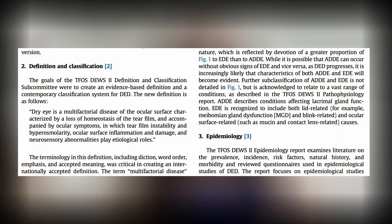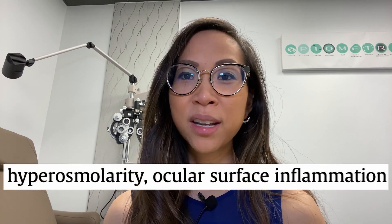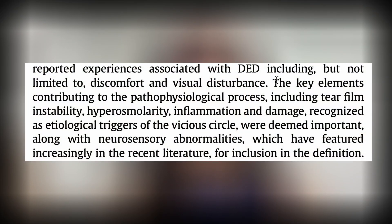To properly introduce the TearLab and Inflammadry, it is important to remind ourselves what the definition of dry eye disease in the TFOS-DEWS2 report is. Dry eye is a multifactorial disease of the ocular surface characterized by a loss of homeostasis of the tear film, accompanied by ocular symptoms in which tear film instability and hyperosmolarity, ocular surface inflammation and damage, and neurosensory abnormalities play etiological roles. Let's zero in on hyperosmolarity and ocular surface inflammation — these two elements were recognized as key elements contributing to the pathophysiology process, triggering and perpetuating the vicious cycle.